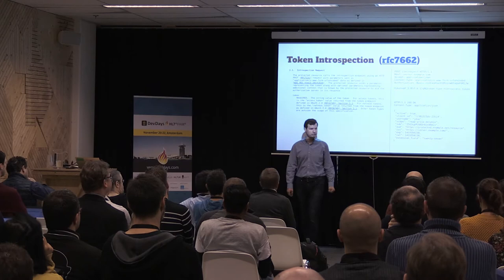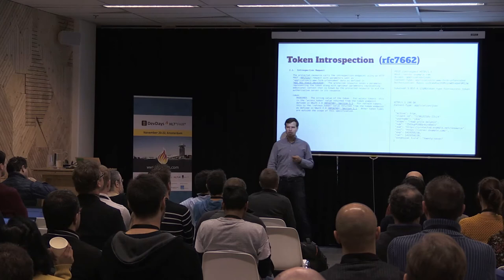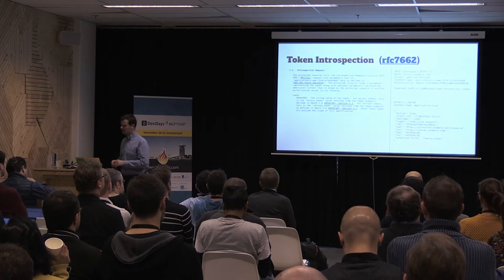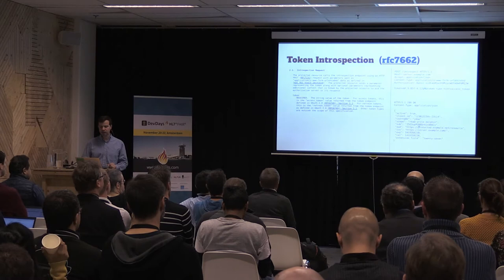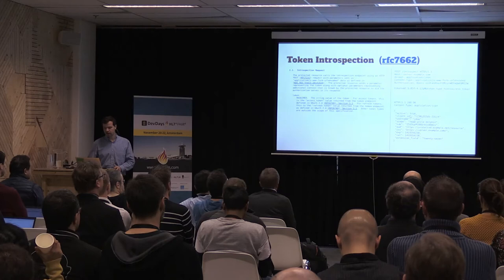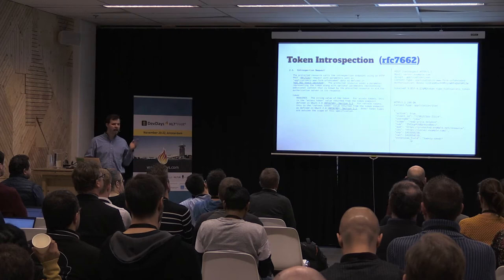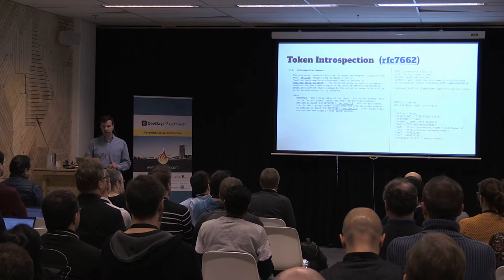The authorization server responds with a JSON payload. This example is taken directly from the spec. There's a Boolean property telling you whether the token is currently active, a property for which client the token is associated with, and other details like who issued it, when it was issued, and when it expires. There are a number of standardized fields defined in the IETF spec, plus the opportunity to layer on additional extensions as needed. It's a super simple API, but already pretty useful in defining those key fields.